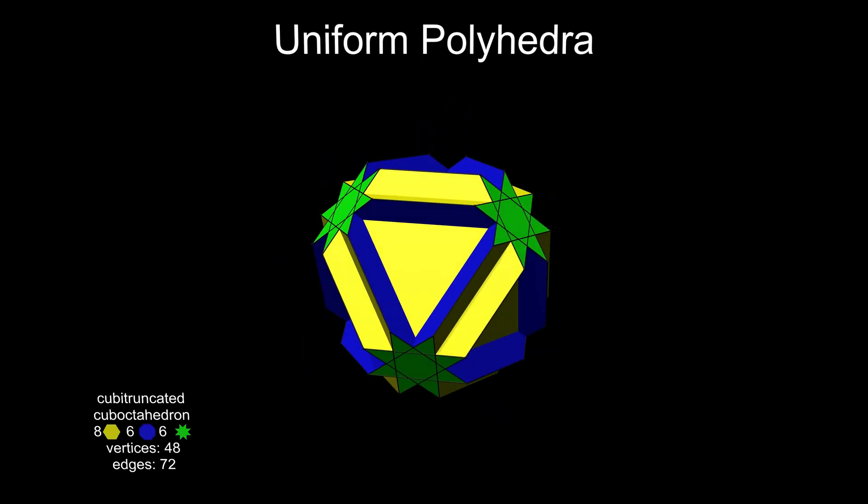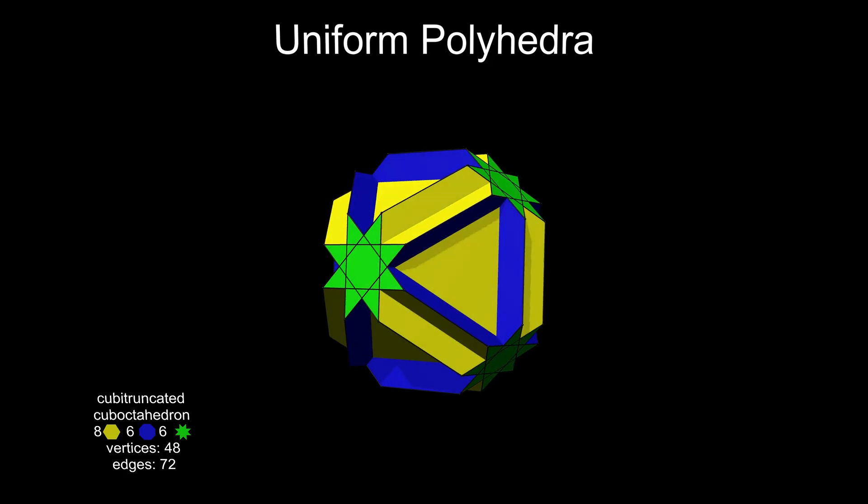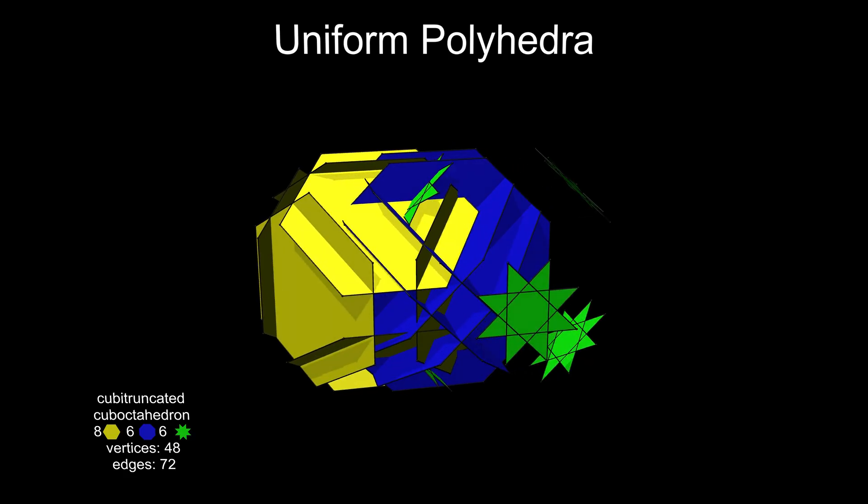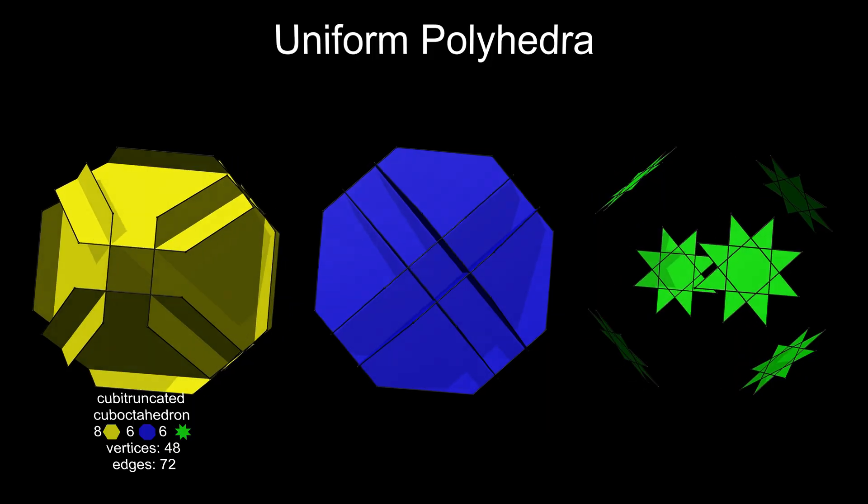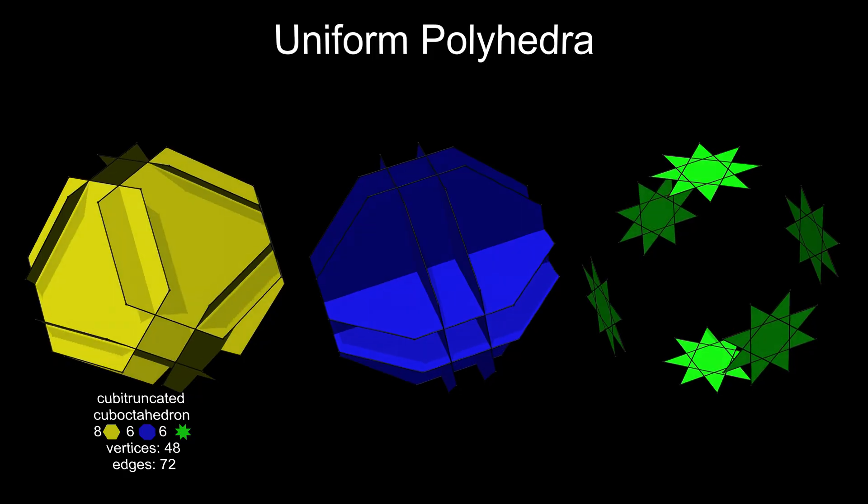The final uniform polyhedron with octahedral symmetry is the cubitruncated cuboctahedron. This is a relatively simple structure with the same hexagons and octagons as the truncated cuboctahedron, but with octograms instead of squares as the truncating faces.